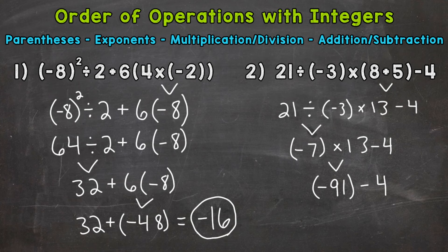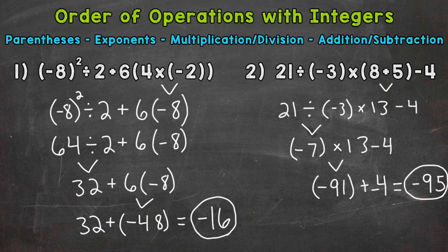There are different ways to think through this last step of subtracting 4 from negative 91. We can think of it as taking away 4, moving 4 spots to the left on a number line. Or if we're subtracting integers, we can always add the opposite — adding negative 4. So we end up with negative 91 plus negative 4, which is the same as negative 91 minus positive 4. Both give us negative 95, and that is our final answer.